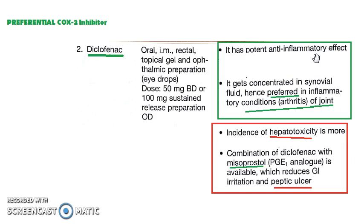Diclofenac can be used for any arthritis — rheumatoid arthritis or osteoarthritis. However, it causes hepatotoxicity, and it is combined with misoprostol so that you can reduce peptic ulcers.